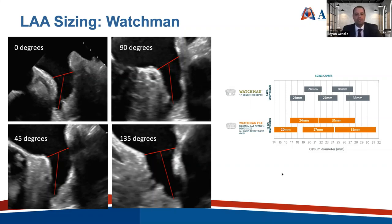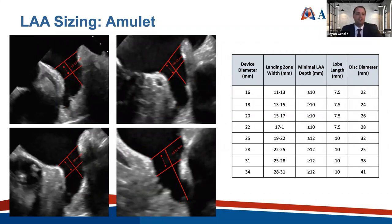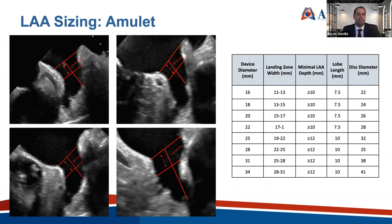We generally approach each procedure with two different device sizes in mind, correlating TEE with fluoroscopy and CT imaging if available. Amulet is sized differently — three measurements are made: the true ostium from the level of the circumflex to the tip of the atrial ridge, but the most important measurement is 10 to 12 millimeters distal to that, where the lobe anchors. These are measured at all four angles, and depth is measured perpendicular to the diameter measurements rather than into the deepest part of the appendage.